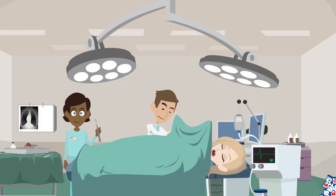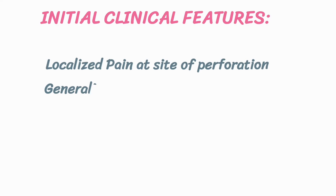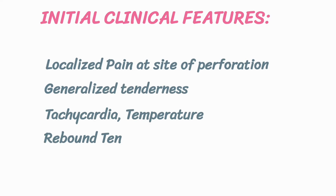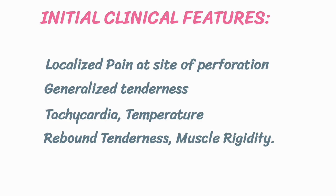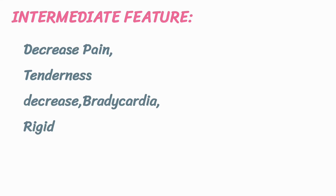Next, let's look at the clinical features of peritonitis, which can be categorized into three stages. Initial features include localized pain at the site of perforation, generalized tenderness, tachycardia, elevated temperature, rebound tenderness, and muscle rigidity. Intermediate features include decrease in pain and tenderness, bradycardia, and reduced rigidity.